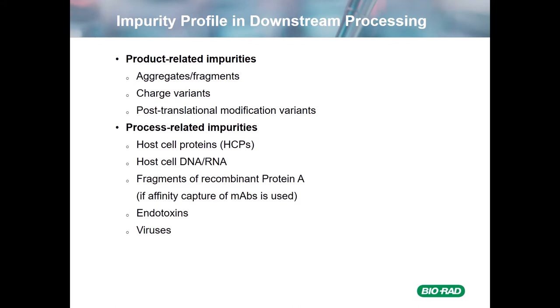I'd like to begin with an overview of an impurity profile in downstream processing. You'll have your product-related impurities — aggregates and fragments, charge variants, and post-translational modifications — as well as process-related impurities: host cell proteins, host cell DNA, RNA. If you're using a protein A capture with a MAB, you'll have fragments of recombinant protein A, endotoxins, and viruses. For most of these, the work will be done in your PD lab, but viruses typically will be done at a CRO.